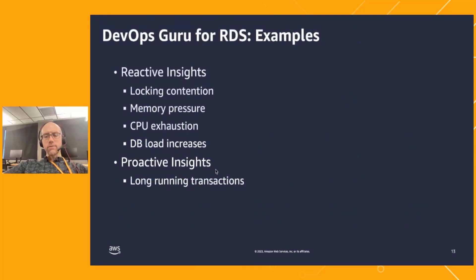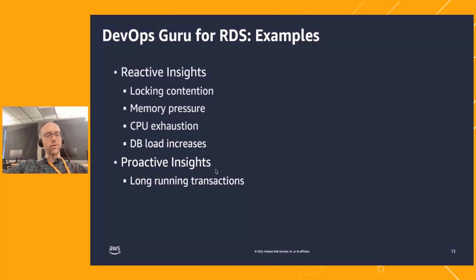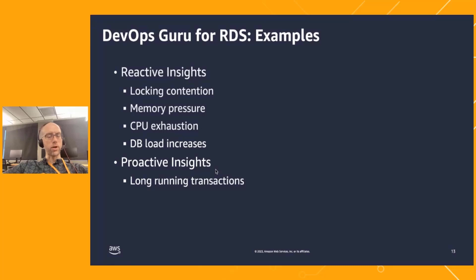Before we get into the demo, just to give a sense of what's possible — what types of issues might be detected. What we've been talking about so far are reactive insights, referring to issues that have happened or are happening now, such as database locking contention, CPU exhaustion on the database, or an increase in database load. There's also a separate type called proactive insights — things that might become issues soon — but I'm not going to demo that today.